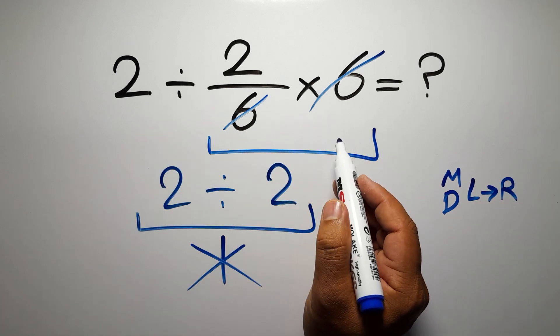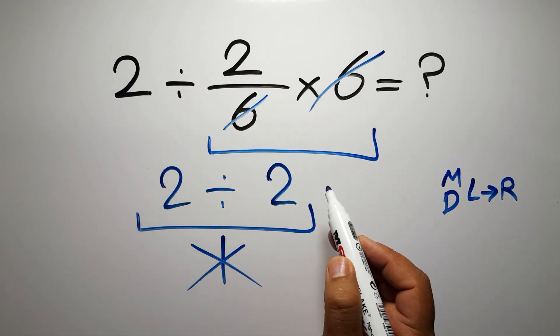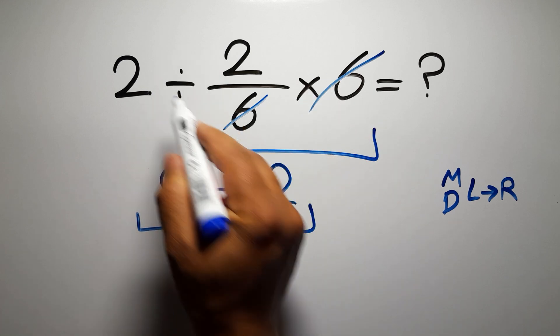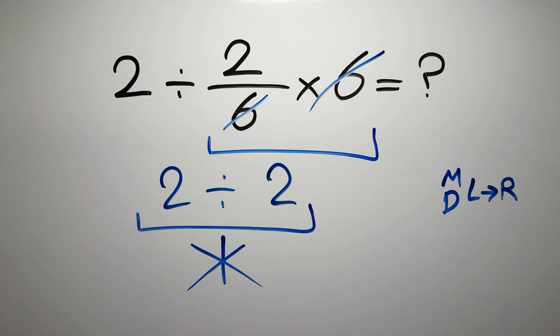So here, first we have to do this division, not this multiplication. If you do this multiplication before this division, it is wrong.